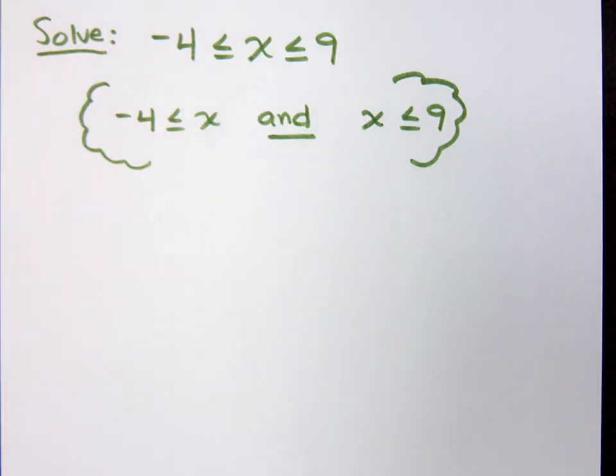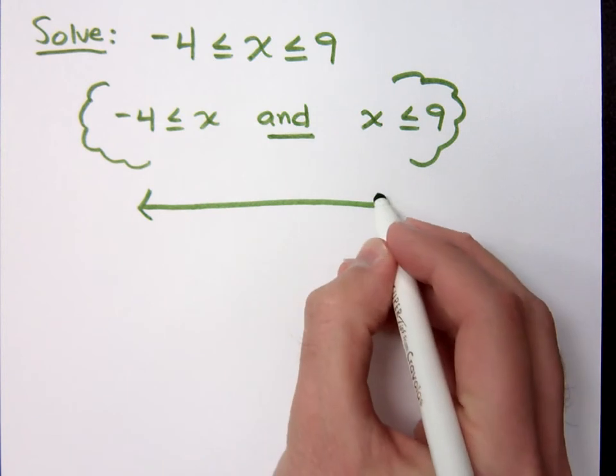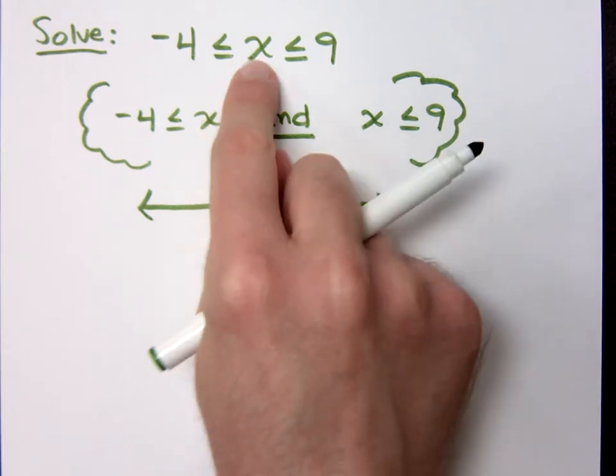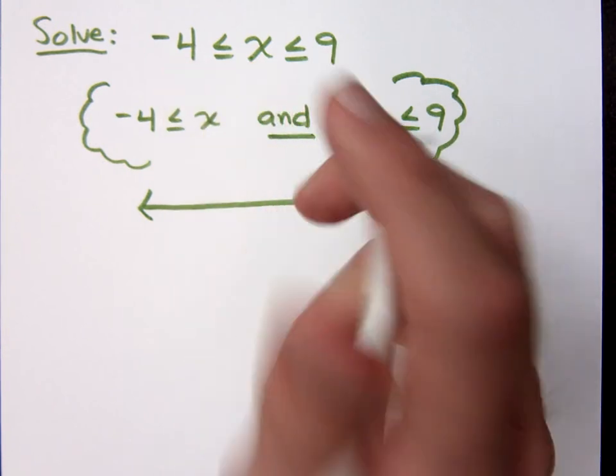That's what's going on here. This is understood to be an intersection, but really the easier way to see this is exactly the way you see this: x is between what two numbers? Negative 4 and 9.